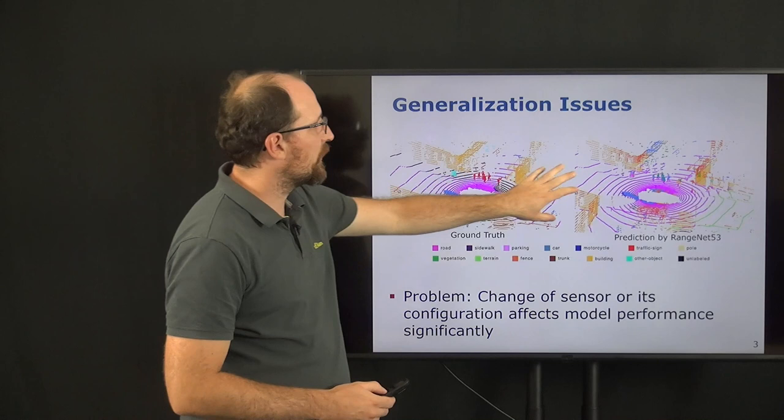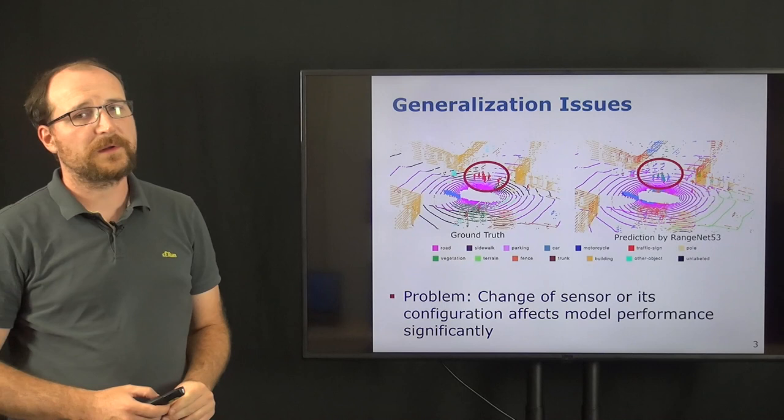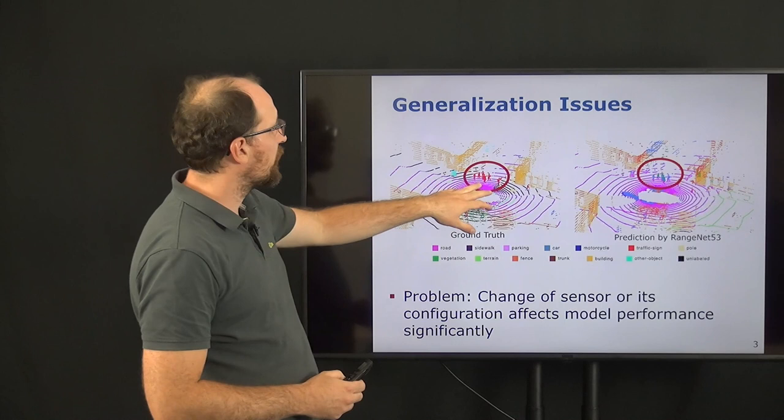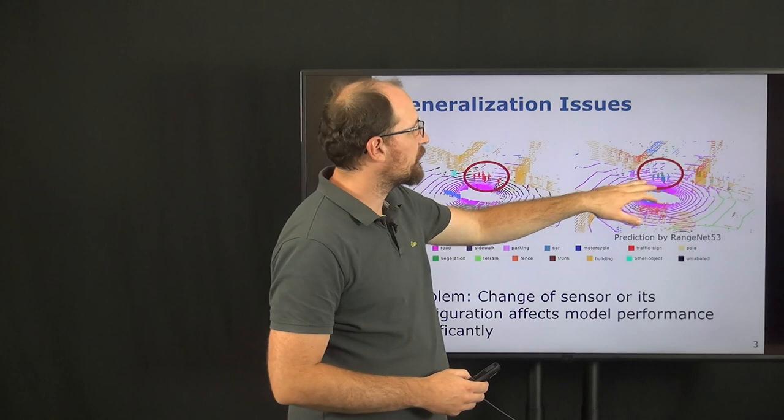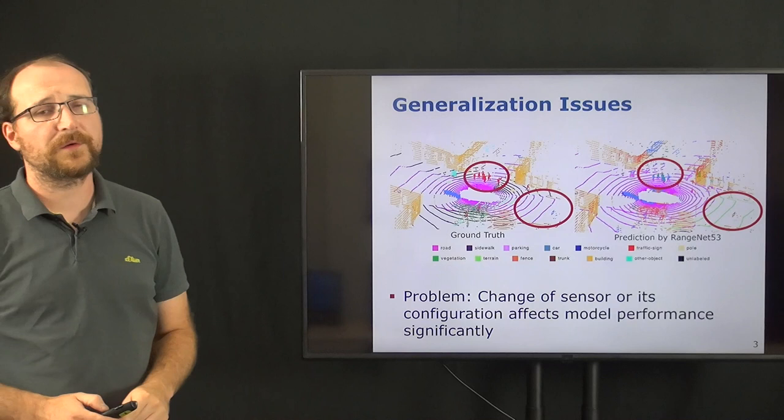that when we compare the ground truth with the generated results by this model, which we just trained on the KITTI dataset, then we get wrongly classified pedestrians in this area here. So this shows the street junction and the pedestrian crossing, and the pedestrian crossing here are wrongly classified as vegetation or car points.